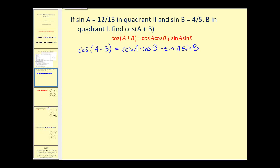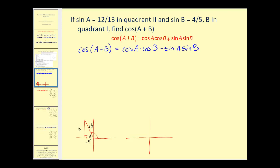Let's sketch these angles in standard position. For angle a in the second quadrant, the reference angle gives us opposite over hypotenuse equal to twelve over thirteen. This is a 5-12-13 right triangle, so the adjacent side is labeled negative five since we are in the second quadrant. For angle b in the first quadrant with sine of four fifths, it's a 3-4-5 right triangle, so the adjacent side has length three.